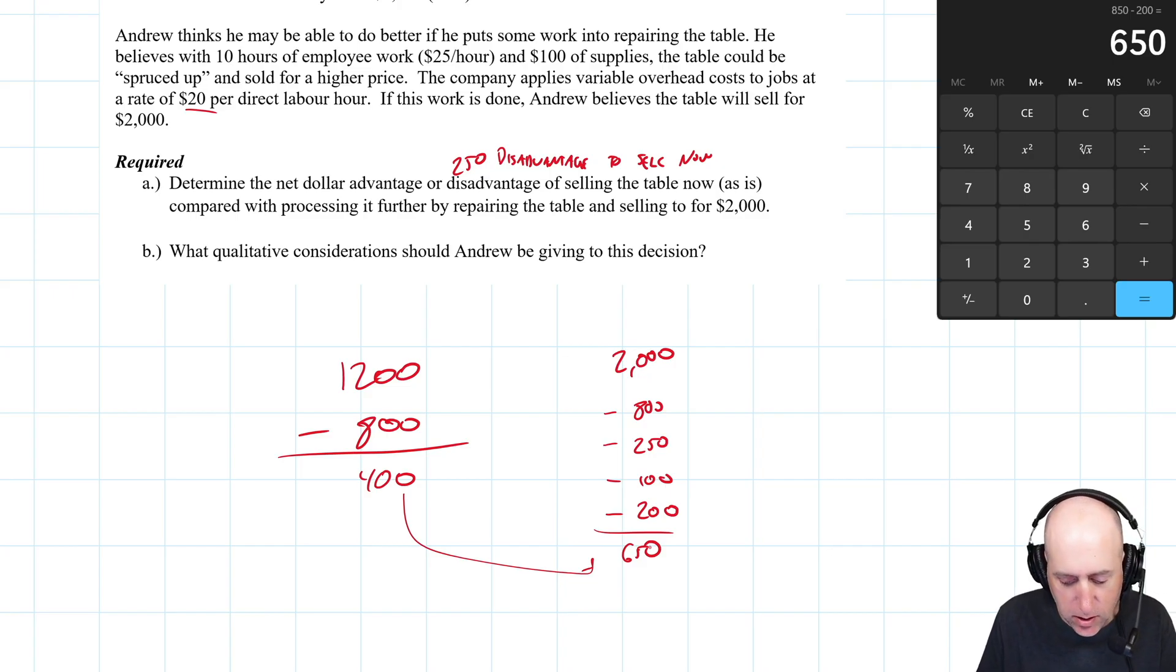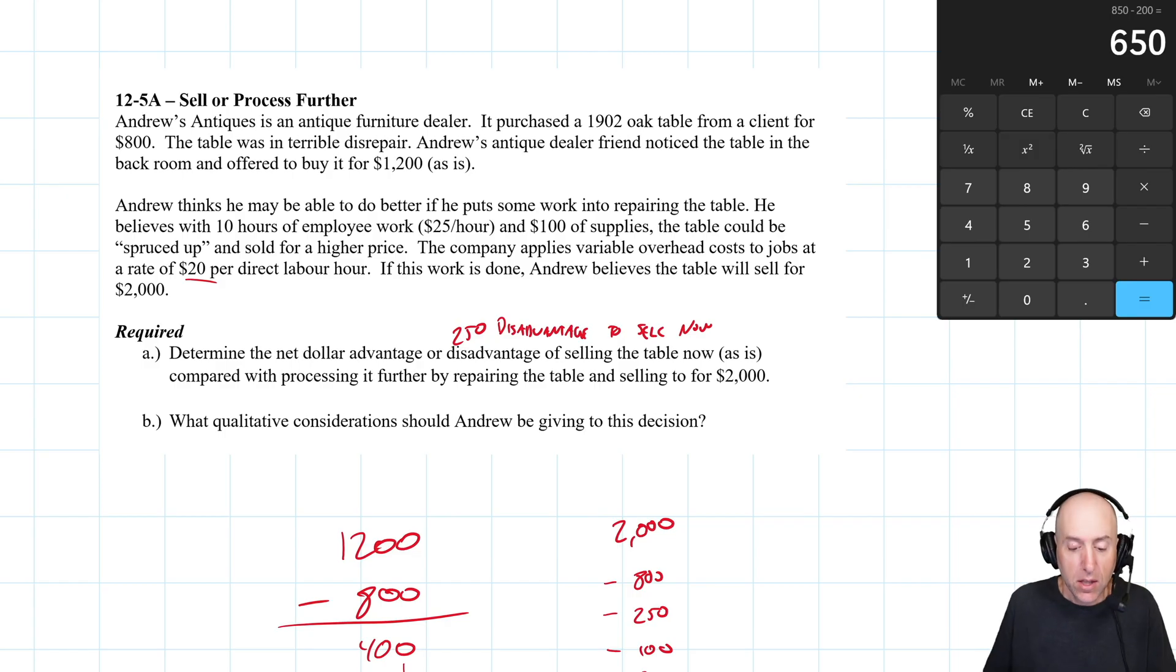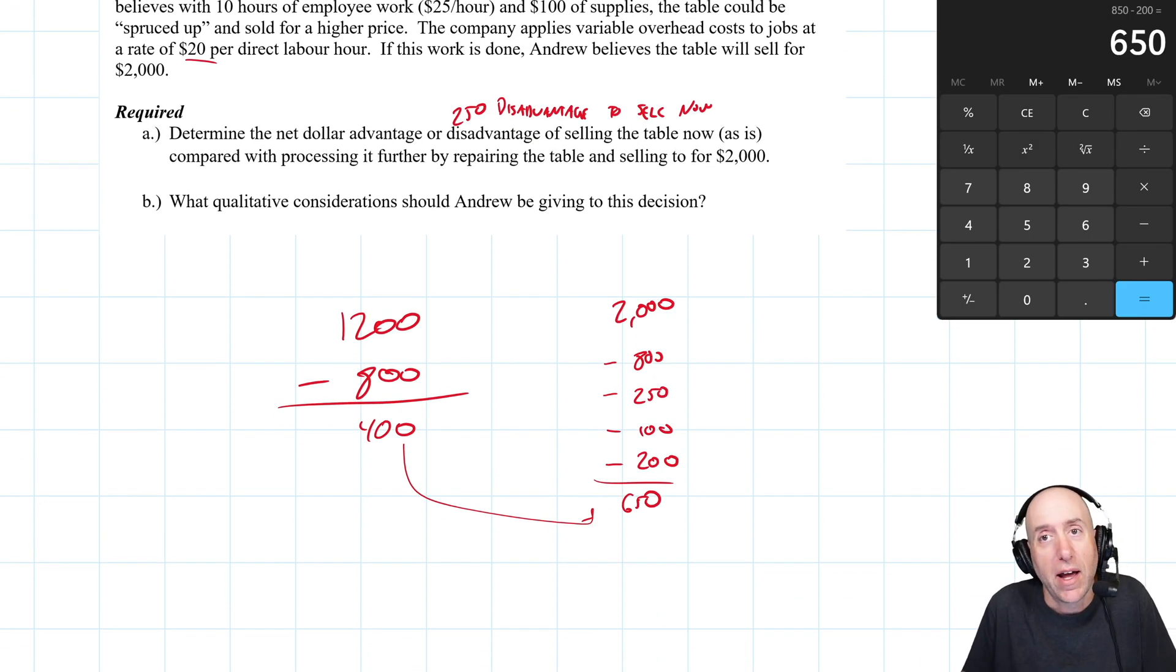What are qualitative considerations Andrew should be giving to this decision? What other things should he be thinking about? Well, there's definitely value to having money in your pocket today. You have no risk, right? Maybe you start to repair the table and you realize there's termites inside and you just got to throw it out. That's the other guy's problem, that's not your problem if you sell it as is. So maybe you will lose a friend that way, but certainly that's the truth. You no longer have the risk of the table.